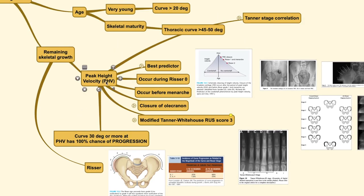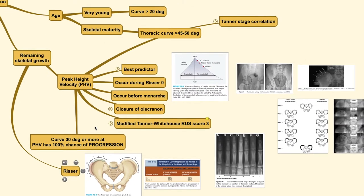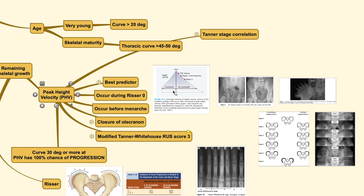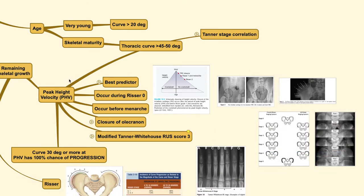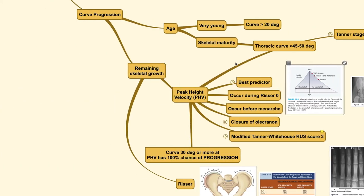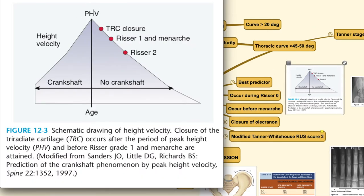One method is the peak height velocity (PHV) method, and the other is the Risser method. Looking at the peak height velocity curve, you can see that at the height of velocity, it is very closely related to the point where the triradiate cartilage of the pelvis closes. It is also very close to the age of Risser 1 or 2 stage of the pelvis, and also very close to the age of menarche.